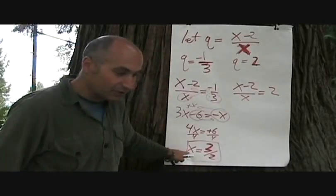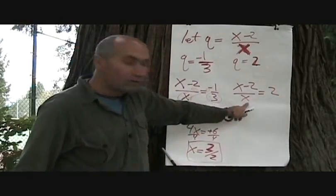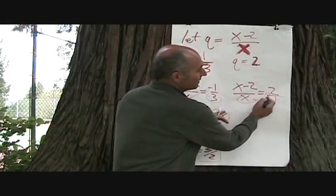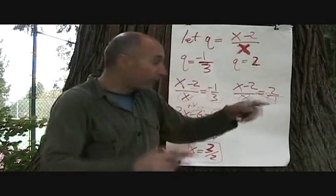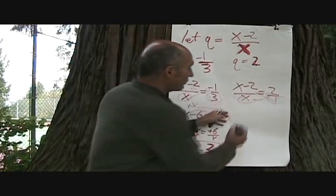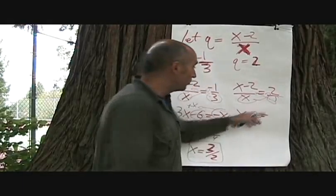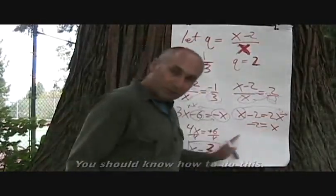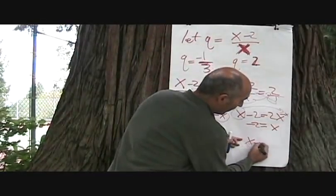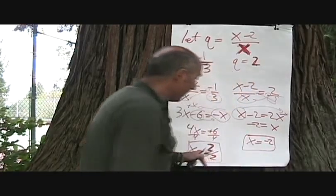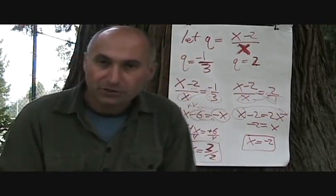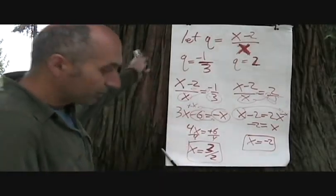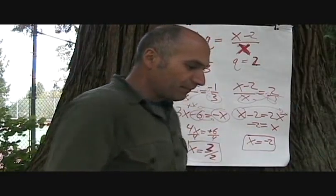For the second case, Q equals 2, which is 2 over 1. Cross multiplying one fraction to another: X minus 2 equals 2X. So our answer here is X equals negative 2. Those are our two X values for our original problem.